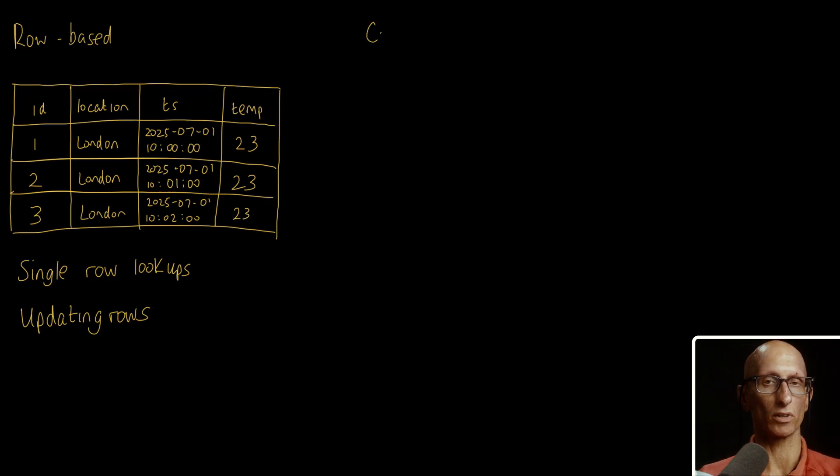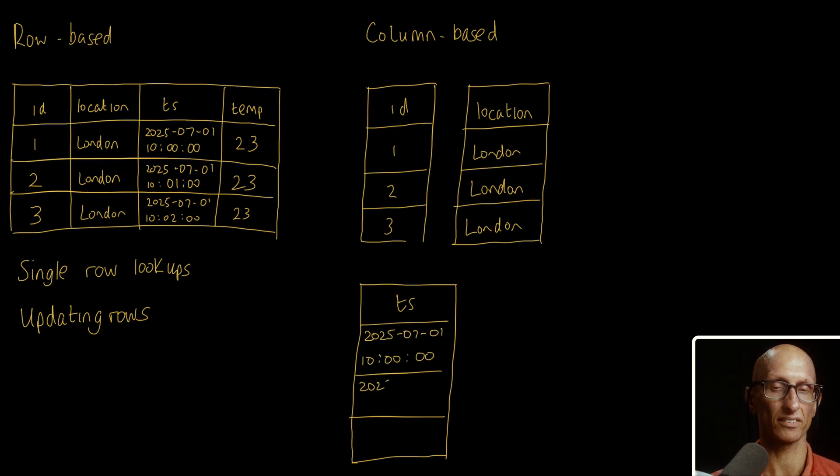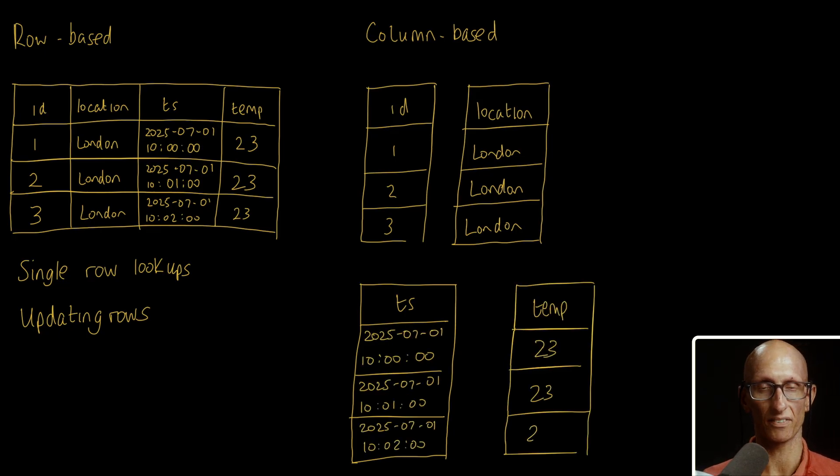Now let's imagine we want to store that data in a column store. This time we store each column separately. So we'd have the reading ID column and all of its values, followed by the location column and all of its values, then the timestamp column and its values, and then finally the temperature column and its values.